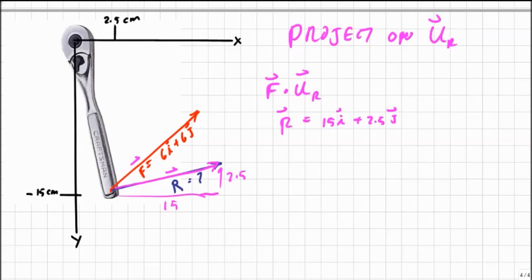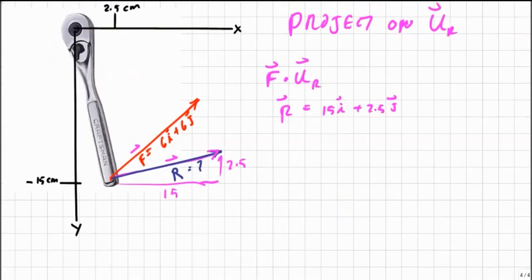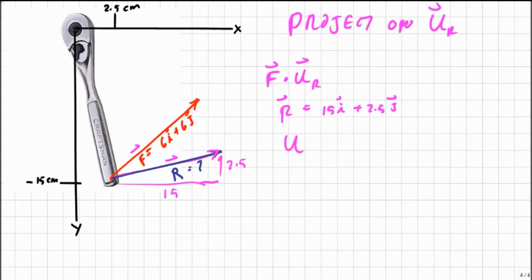I need a unit vector in that direction. We know the magnitude of that one from the previous page was 15.2. So my unit vector in the direction of R is 15 over 15.2 i plus 2.5 over 15.2 j, and that equals 0.987 i plus 0.164 j.